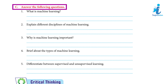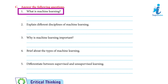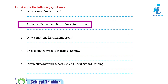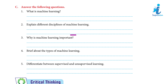Answer the following questions: 1. What is machine learning? Answer: Machine learning refers to the evolution of software used to carry out artificial intelligence-related tasks. 2. Explain different disciplines of machine learning. Answer: The disciplines of machine learning are: 1. Statistics, 2. Psychological models, 3. Evolutionary models. 3. Why is machine learning important? Answer: Machine learning is important to improve the ability of a machine to assist people more effectively in different tasks.